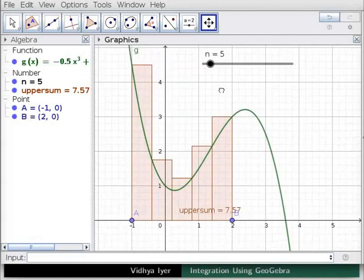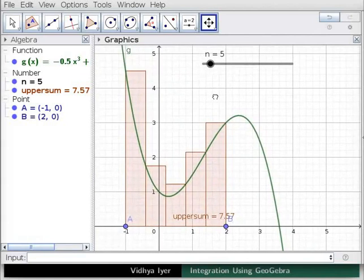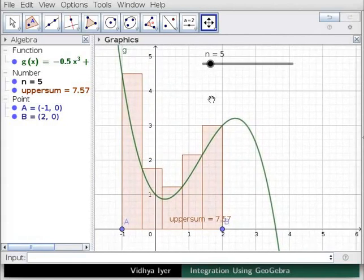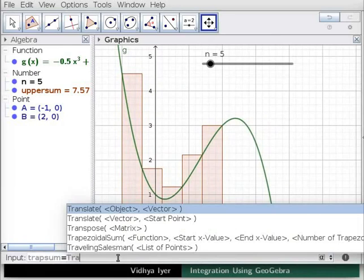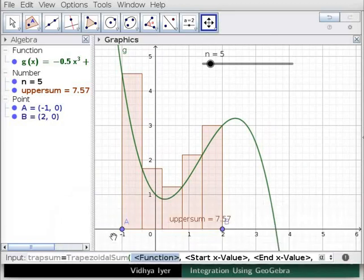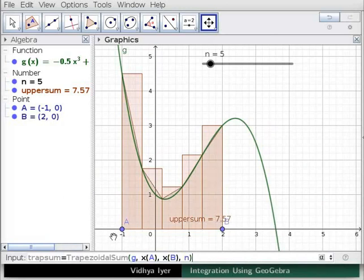Drag the background to move the graph to the left. Let us now assign the variable label trapsum to the trapezoidal sum. In the input bar, type trapsum equals capital T-R-A. A menu with various options appears. Select the following option.